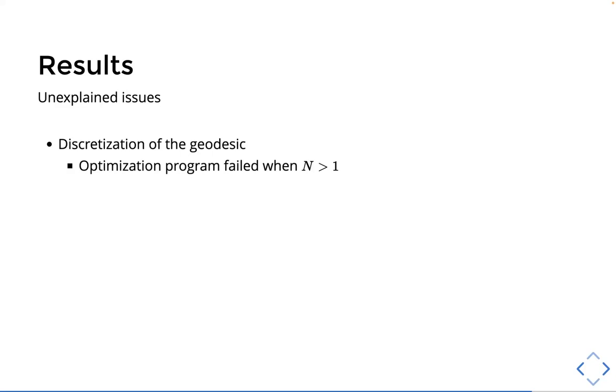And so in future work, I do want to explore warm starting the larger n geodesic optimization with this solution for the n equals one geodesic. And then in subsequent iterations, warm starting that with the previous time step solution. And given the smoothness of the system and metric, the previous solutions should serve as a good initial guess.